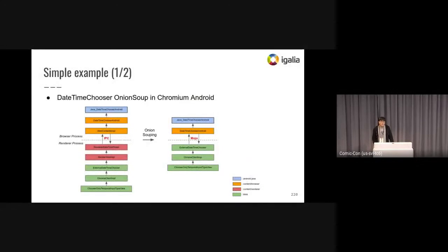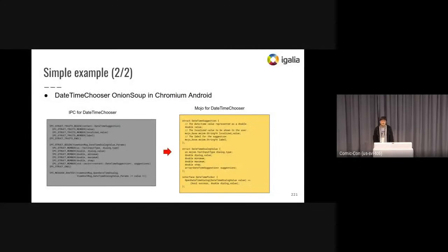To help you understand Onion Soup, here is a simple example. This diagram shows how the call flow changed after Onion Soup on DateTime Chooser in Chromium Android. To do the Onion Soup, I converted the legacy IPC to Mojo interface first, then removed the unnecessary functions in the content layer, and moved the needed logic to Blink. As you can see, the result is a simpler call flow in the DateTime Chooser on Chromium Android. This is the conversion from the legacy IPC to Mojo interface — the Mojo interface is more readable and close to the C++ side.